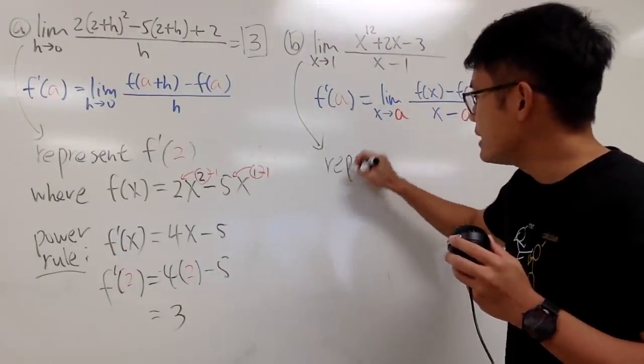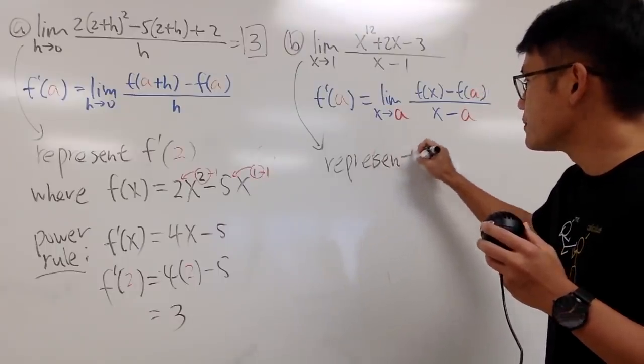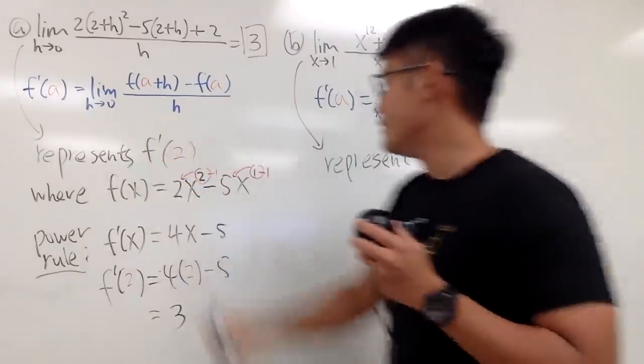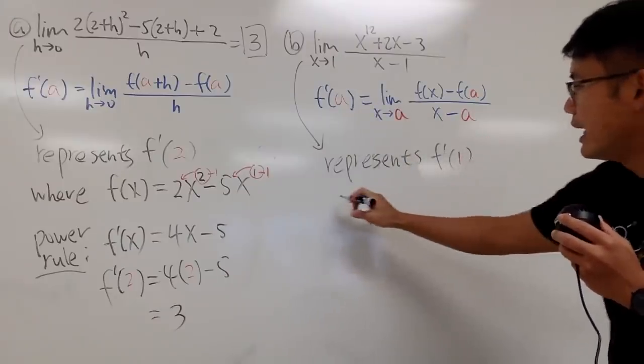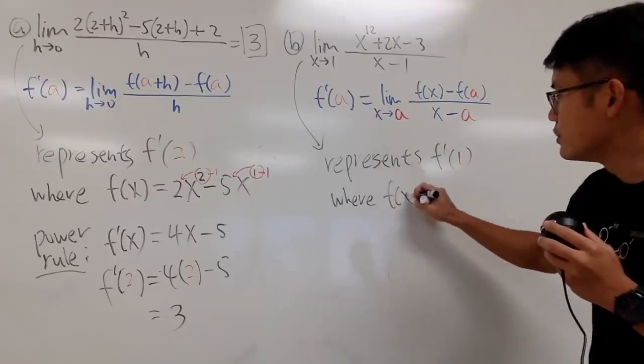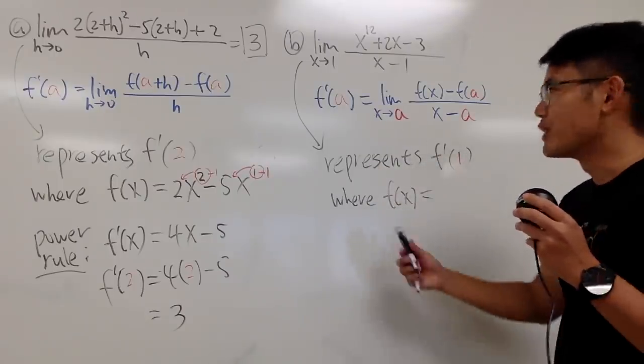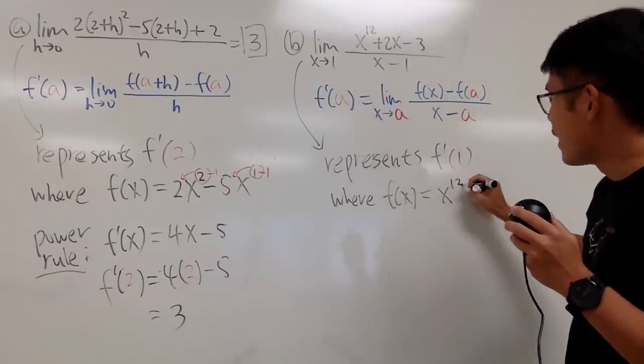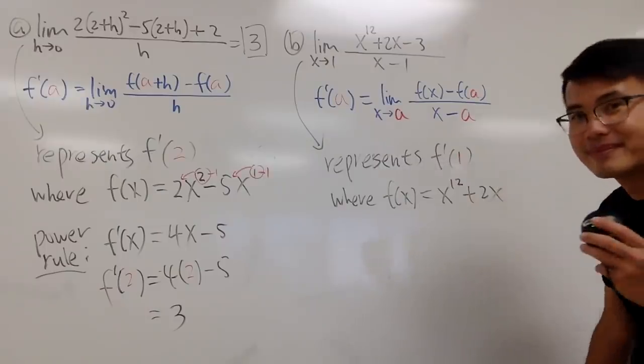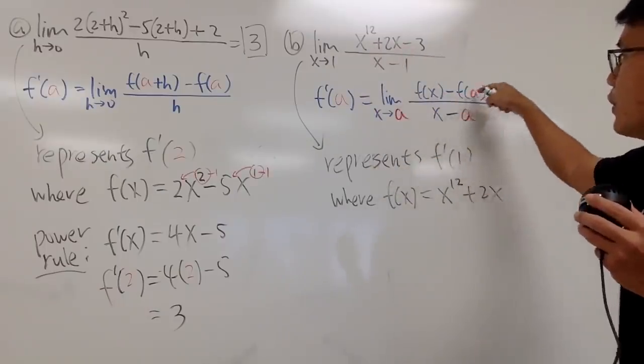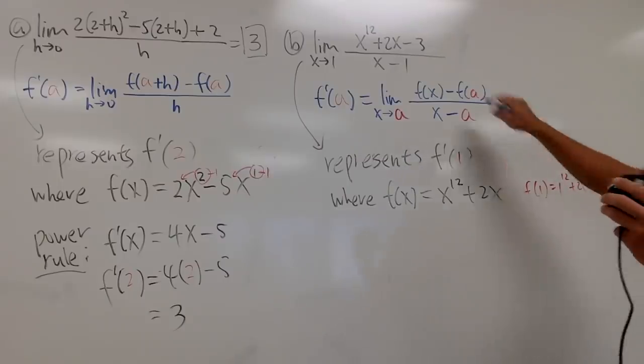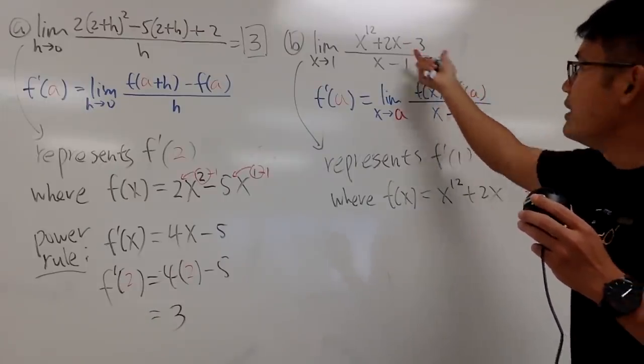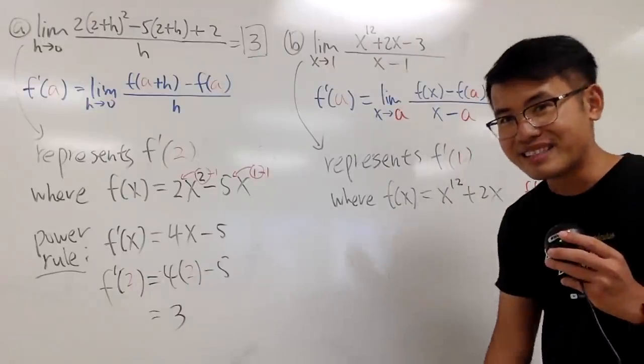And now, we can identify what this limit represents. This right here represents, let me just write this down for you guys. Represents f' of 1, right? A is 1 right here, so f' of 1. And I will have to tell you where the function, which is f of x, is what? This right here is simply just this. x to the 12th power plus 2x. Alright? Once again, f of x is that part. And then, if you want to figure out what f of 1 is, notice, f of 1 is just 1 to the 12th power plus 2 times 1, which is 3. So, when you see a minus 3, this is exactly minus A. Anything before that, that will be the function f of x.